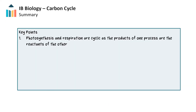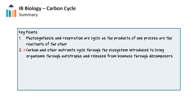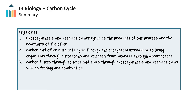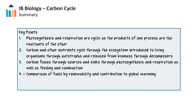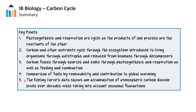In this video we looked at how photosynthesis and respiration are cyclic, as the products of one process are the reactants of the other. We saw how carbon and other nutrients cycle through the ecosystem and are introduced to living organisms through autotrophs and released from biomass by decomposers. We looked at how carbon fluxes through sources and sinks through photosynthesis and respiration, as well as feeding and combustion. We compared sources of fuel by their renewability and their contribution to global warming. Finally, we saw how the Keeling Curve's data shows an accumulation of atmospheric carbon dioxide levels over decades while taking into account seasonal fluctuations.